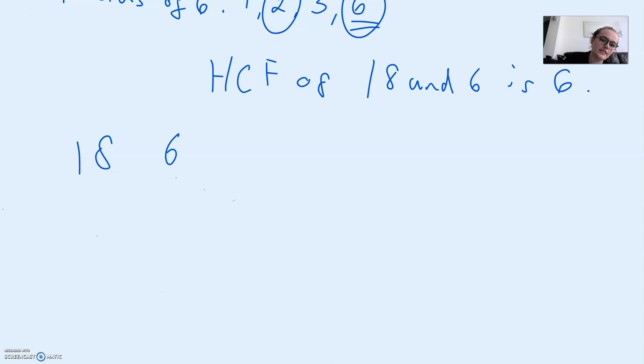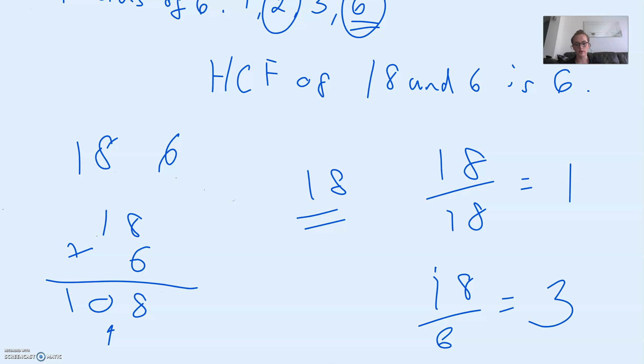If we have 18 and 6, we can work out 18 times 6 by using the short multiplication method, and we will get 108. However, that's not the smallest. The smallest would be 18, as 18 is divisible by 18, that gives a whole number, and 18 is divisible by 6, that gives a whole number.